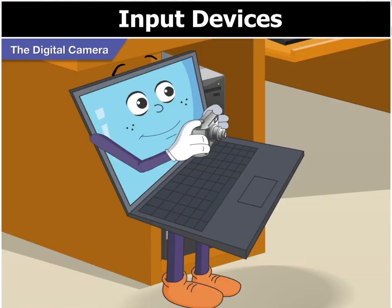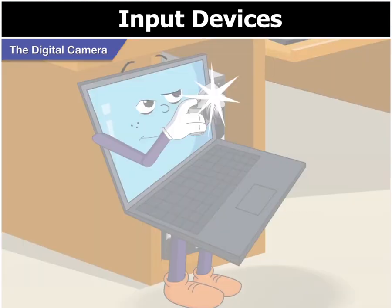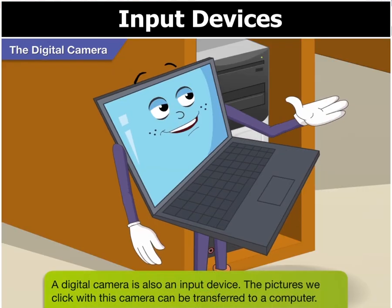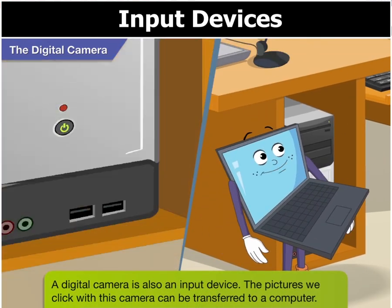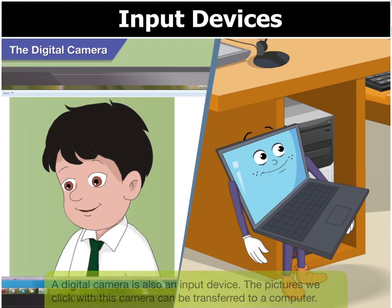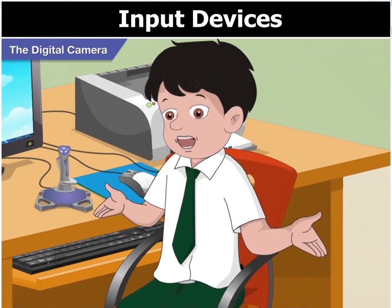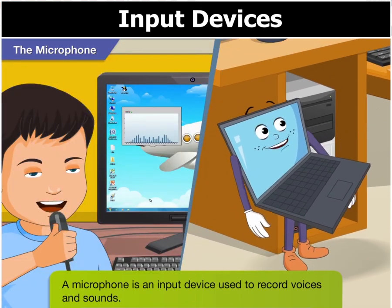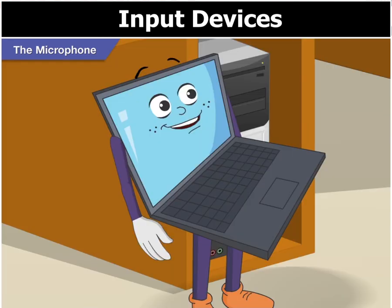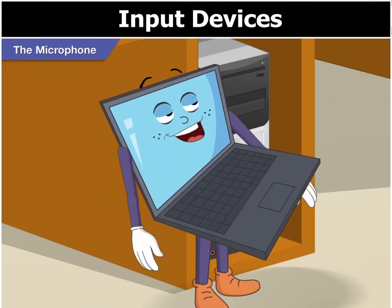Say cheese, Goggle! What? You want to click my picture with your digital camera? Yes, but I also want to tell you that a digital camera is an input device as well. The pictures you click with this camera can be transferred to your computer. That's great, Goggle! Oh, and let's not forget the microphone. It is also an input device and can be used to record your own voice. Can I use it to record my voice? Sure you can, Goggle! Wow!